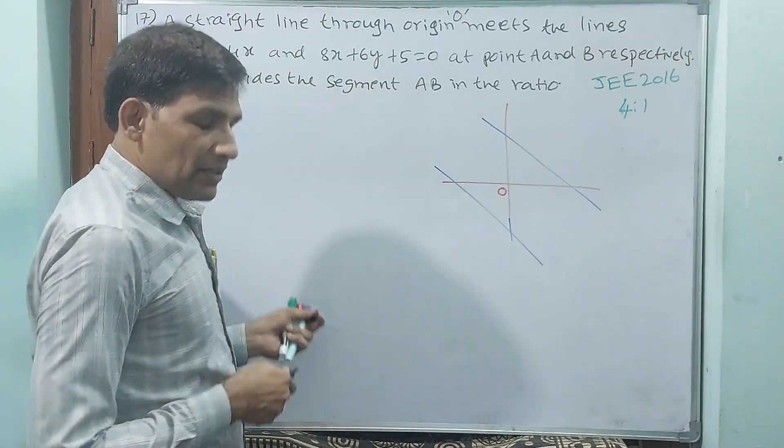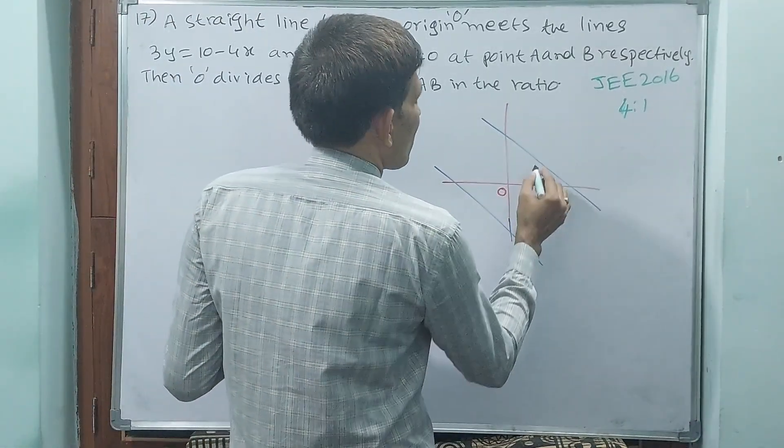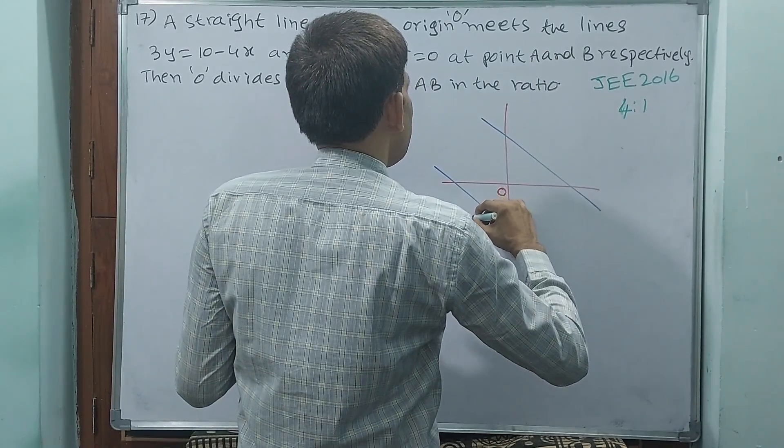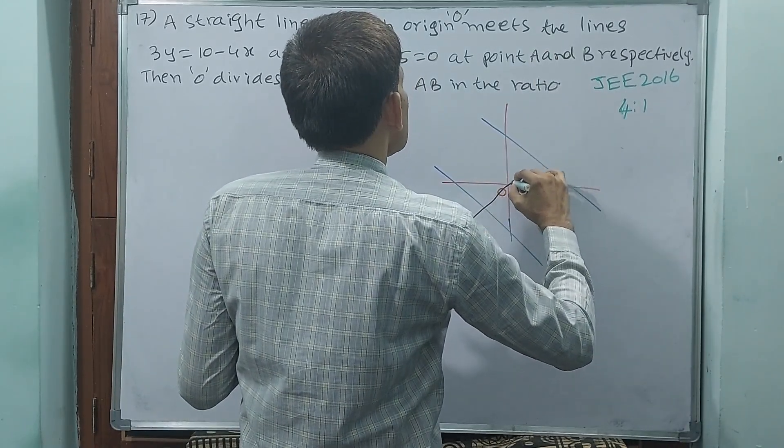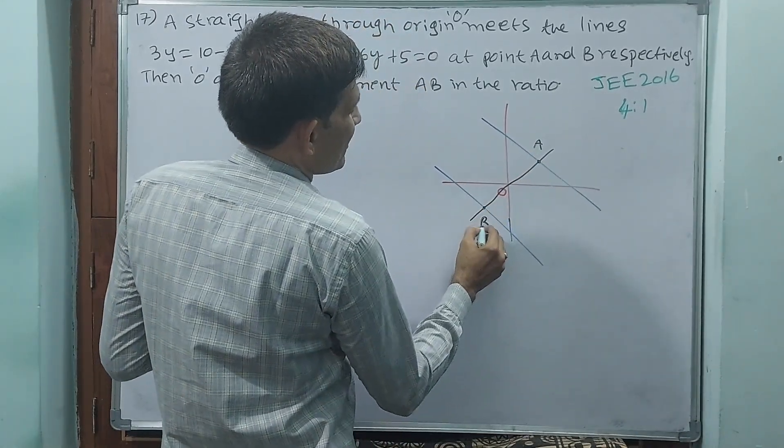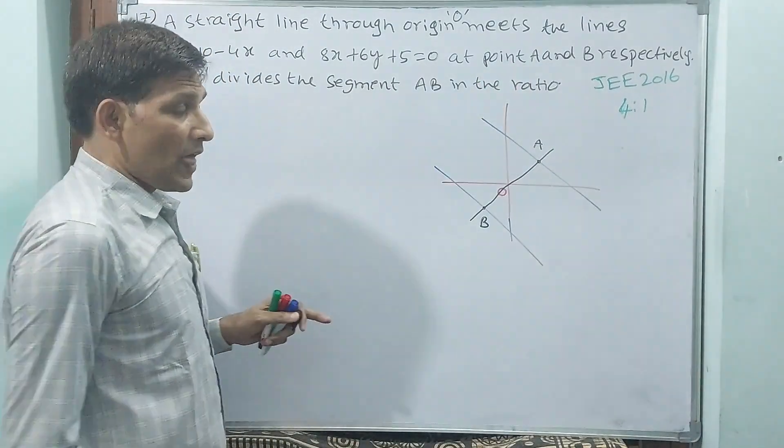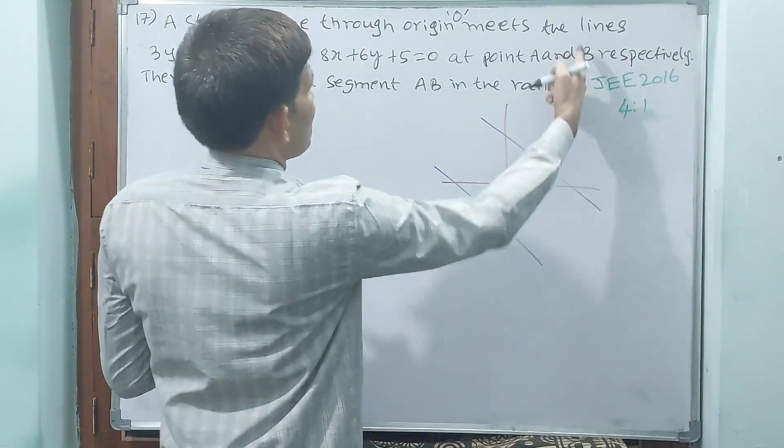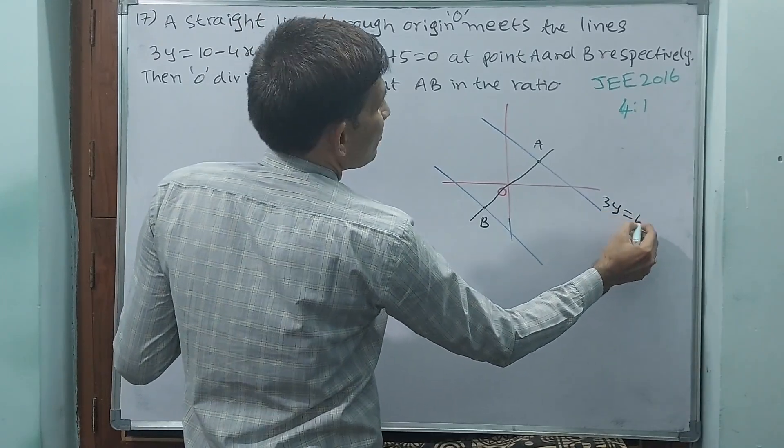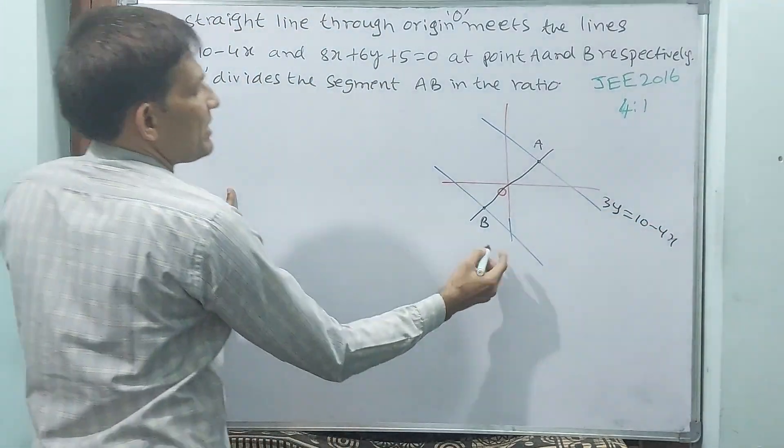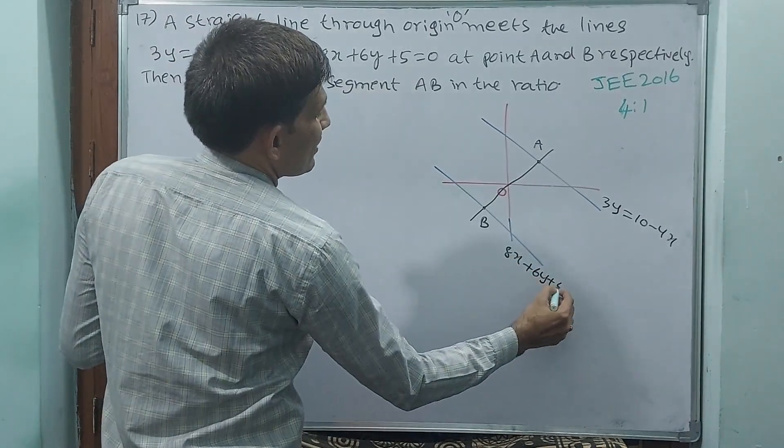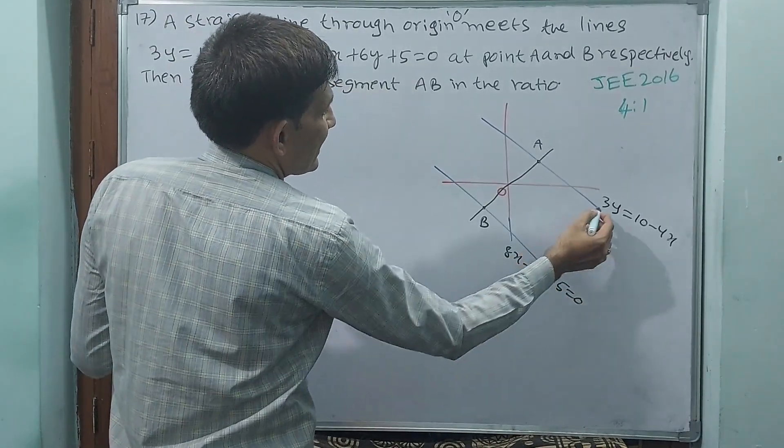This line is passing through origin and meeting both these lines at point A and point B. Respectively means first line A will be 3y = 10 - 4x. Second line will be 8x + 6y + 5 = 0. This is the second line, this is the first line.